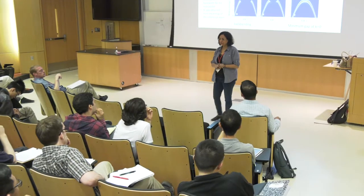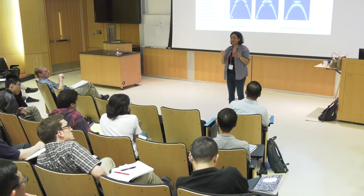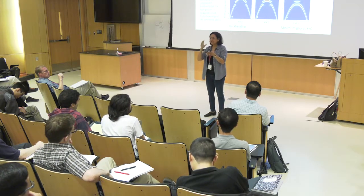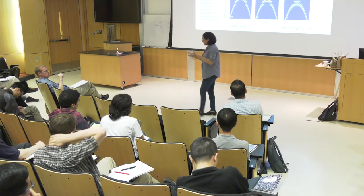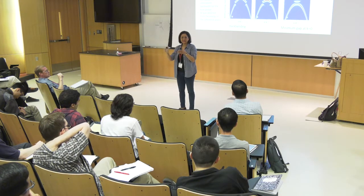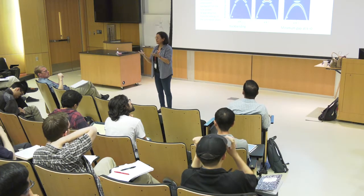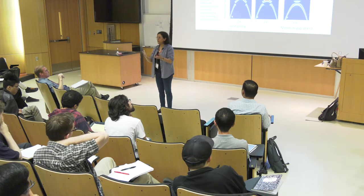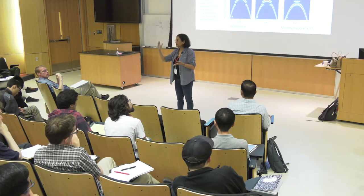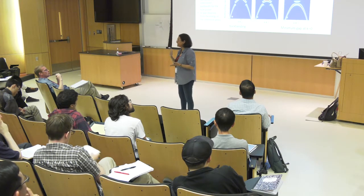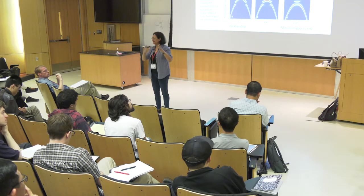Usually fermion problems have this sign problem in the determinant, but here for the attractive case, you get a determinant of up and down fermions, and if one of them changes sign, the other also changes sign. So you have a net probability that is always positive, and this is true for any chemical potential — you don't have to be at half-filling. So you get unbiased results in the intermediate coupling regime.